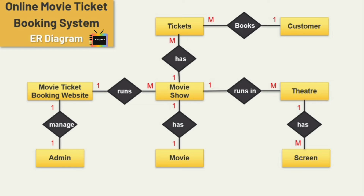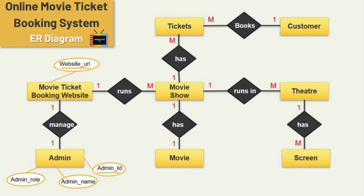Now let's look at the attributes. For the admin entity, I am adding three attributes: admin ID, admin name, and admin role — and admin ID is the key attribute. For the movie ticket booking website entity, the first attribute is website URL, which is the key attribute, followed by website name and contact number.